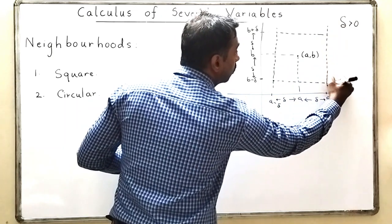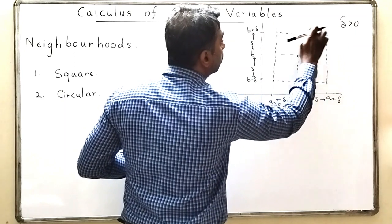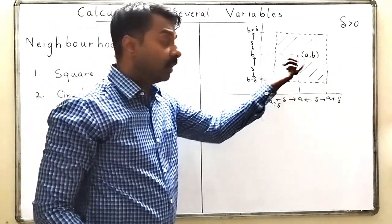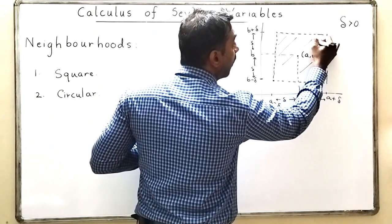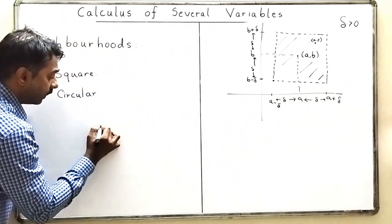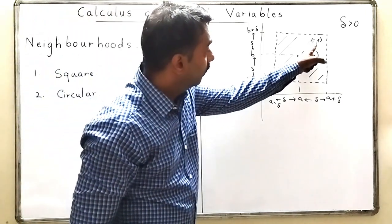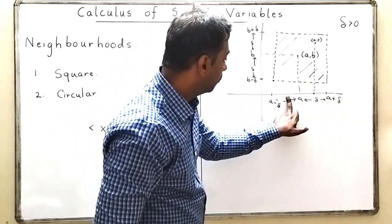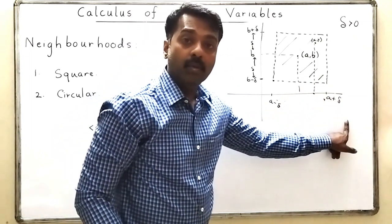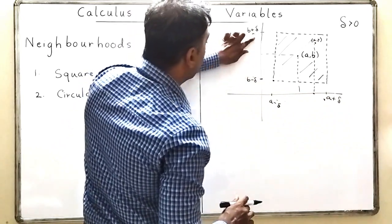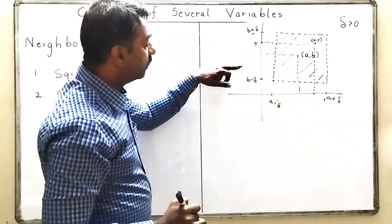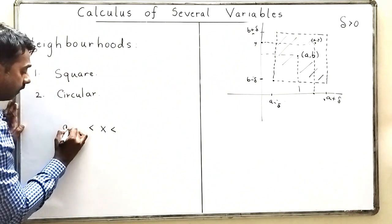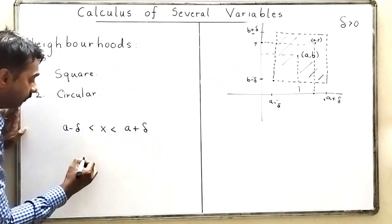You can see you get a square. I will erase the part which is outside the square. Now, what is the property of every point of this square? If I take any point (x, y) in this square, then the x coordinate will be between a minus delta and a plus delta, because x lies between those two points. Similarly, the y coordinate also lies between b minus delta and b plus delta.